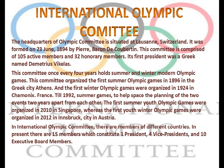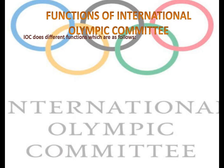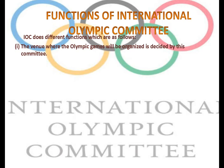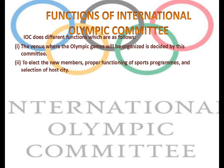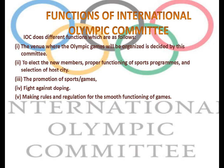Now, what are the functions of the International Olympic Committee? First, the venue where the Olympic Games will be organized is decided by this committee — selecting the host city. Second, to elect new members and ensure the proper functioning of the sports program. Third, the promotion of sports and games. Fourth, to fight against doping. Fifth, making rules and regulations for the smooth functioning of the games.